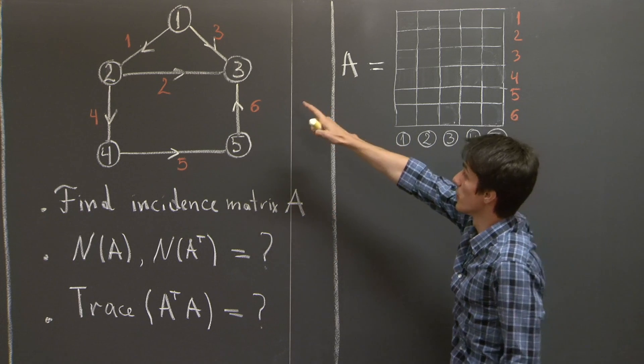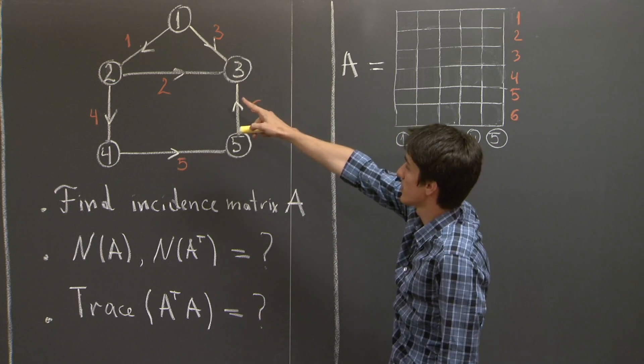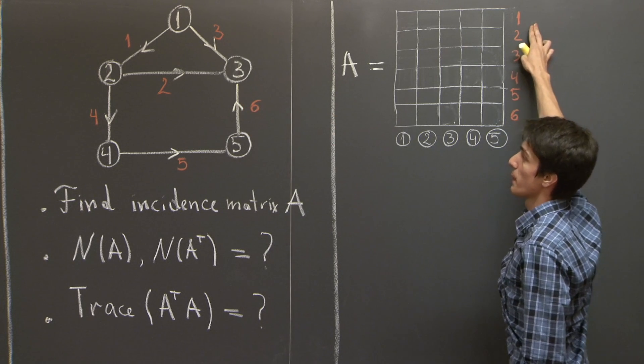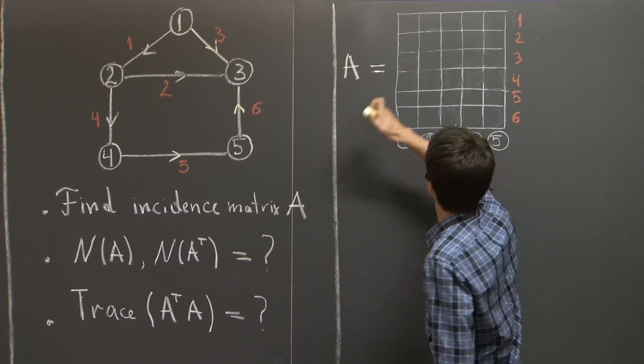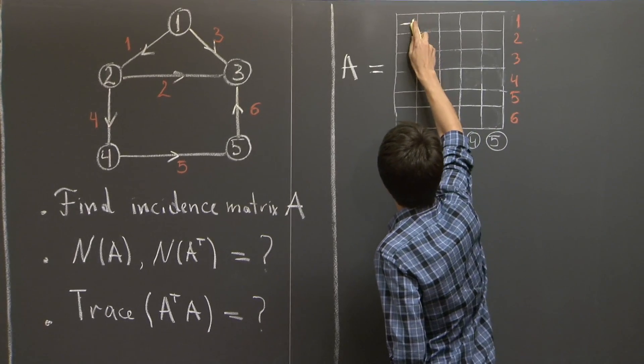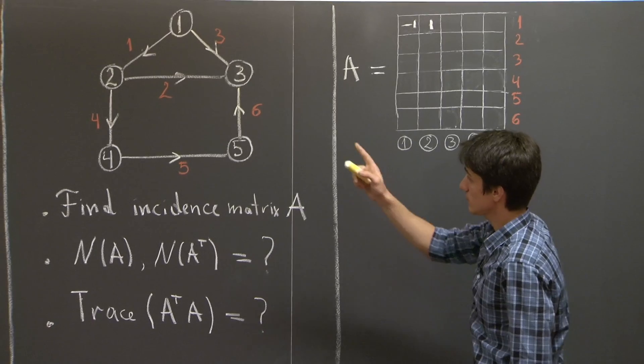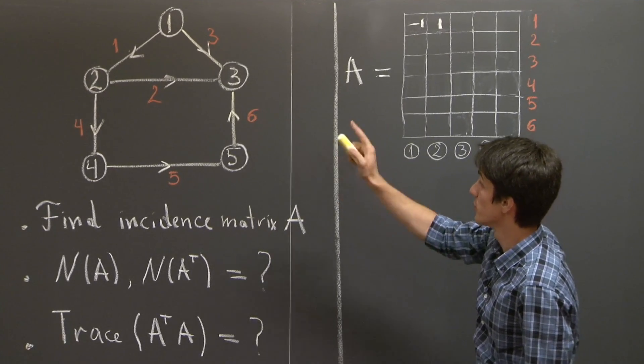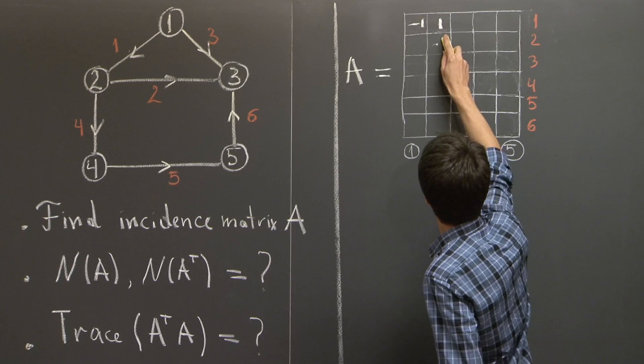let me just do it concretely. So let's look at edge number 1, so it corresponds to the first row. It connects 1 to 2, so we have a negative 1 and a 1. Then edge number 2, it connects node 2 to 3, so negative 1, 1.